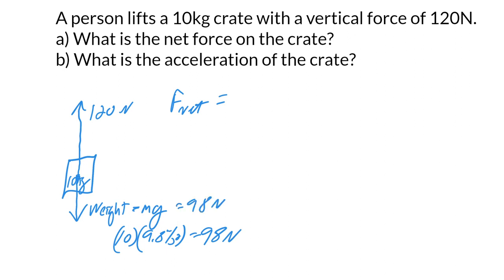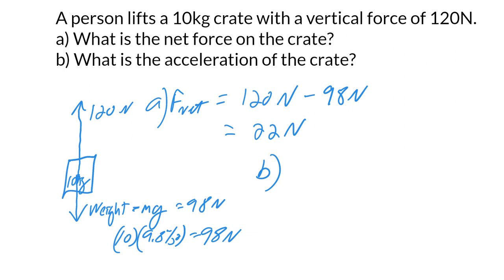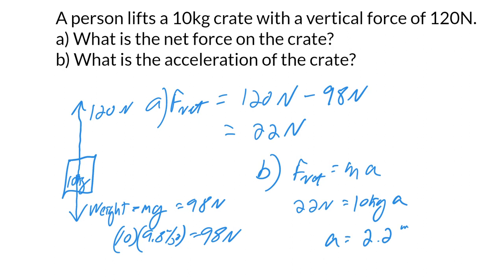When we calculate the net force, we have 120 newtons going up and subtract 98 newtons pulling back down, so our net force for this one is 22 newtons. Our acceleration is net force divided by mass — so 22 newtons divided by 10 kilograms gives us 2.2 meters per second squared. The direction this time would be upward, because we're lifting it upwards.